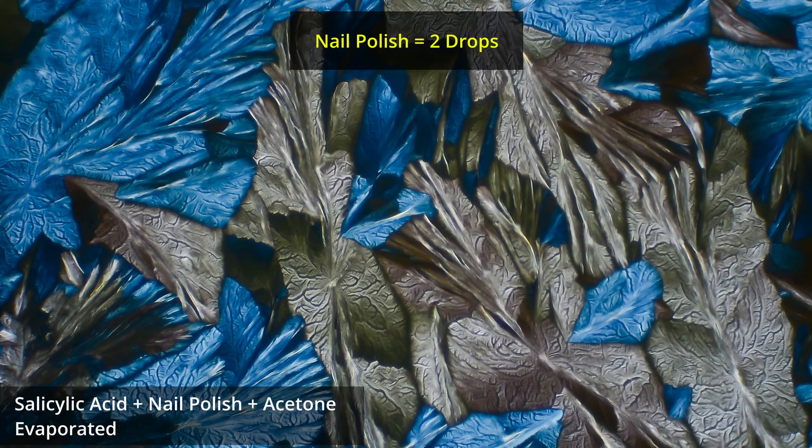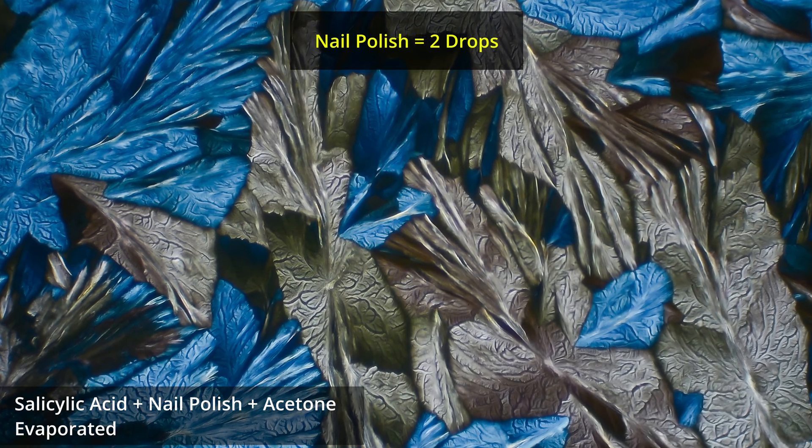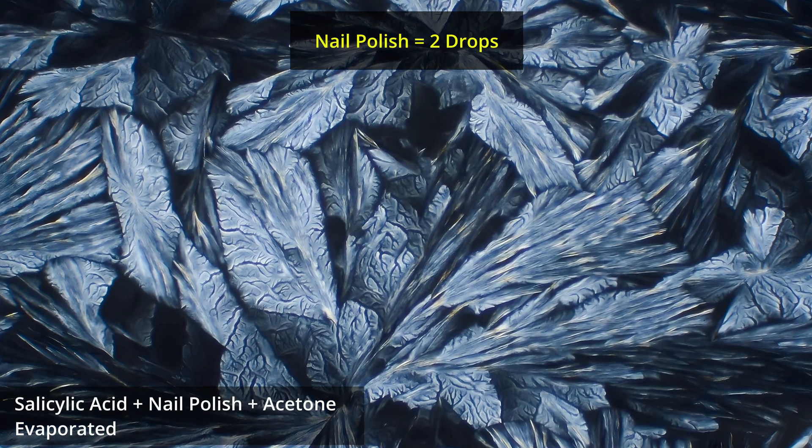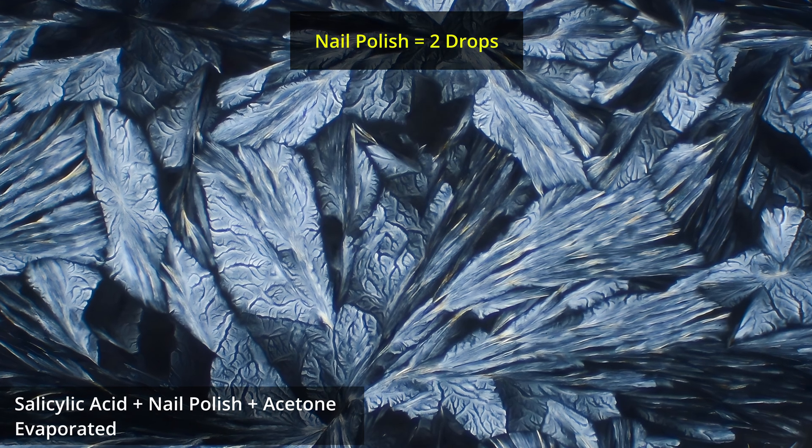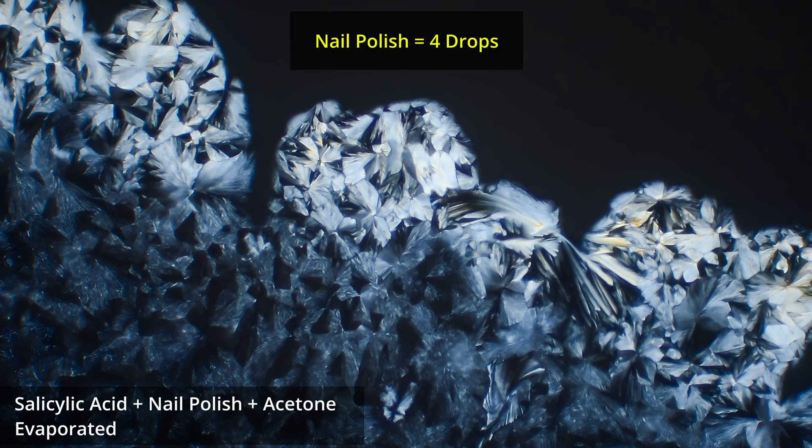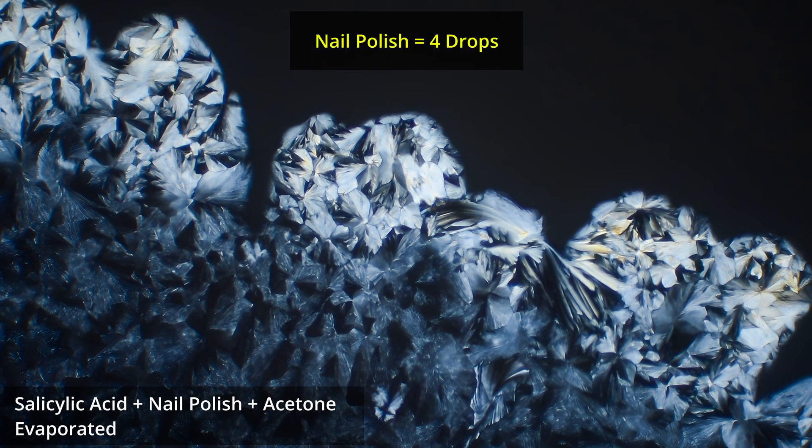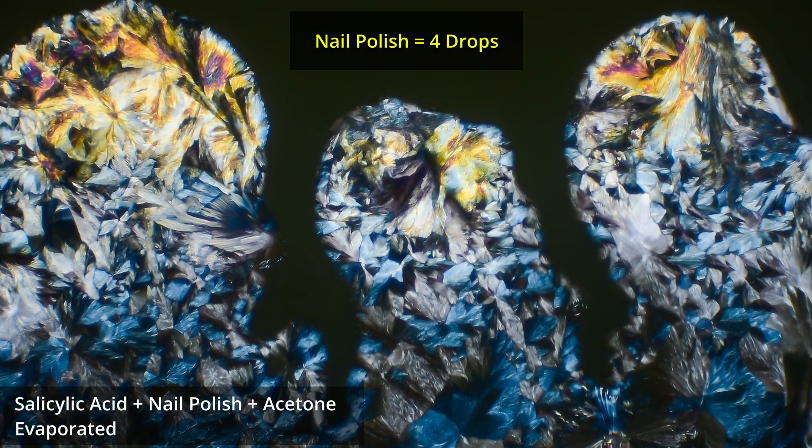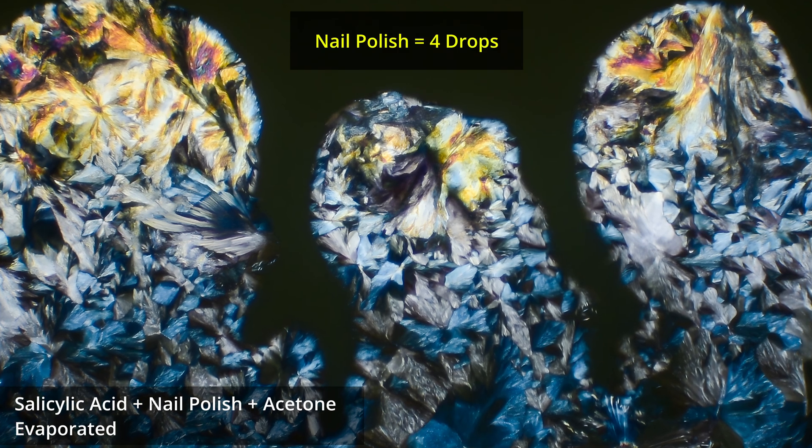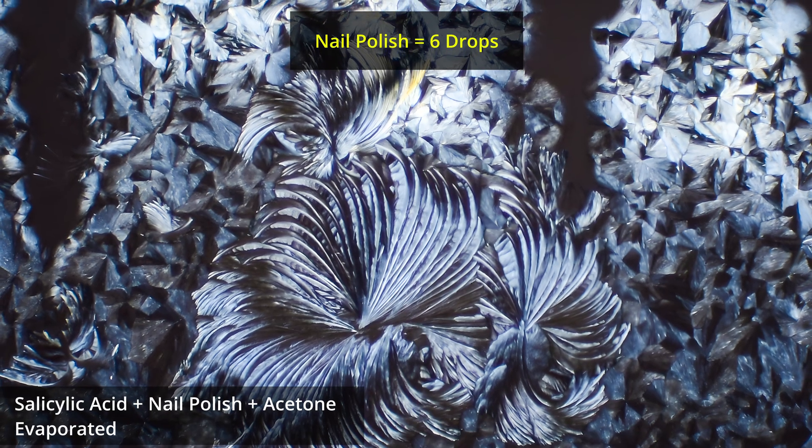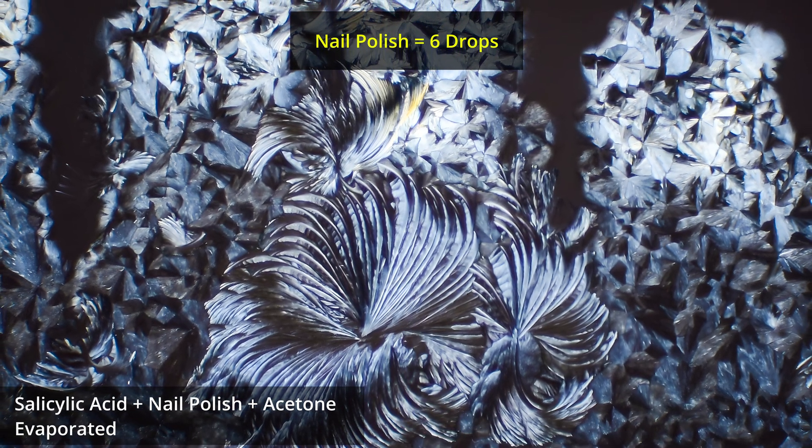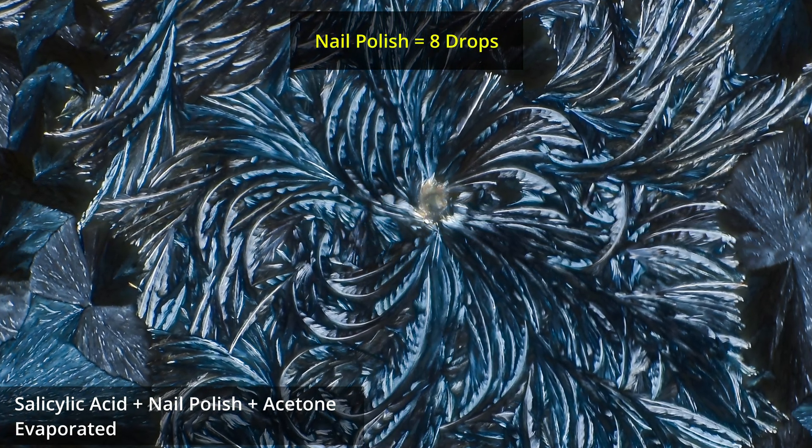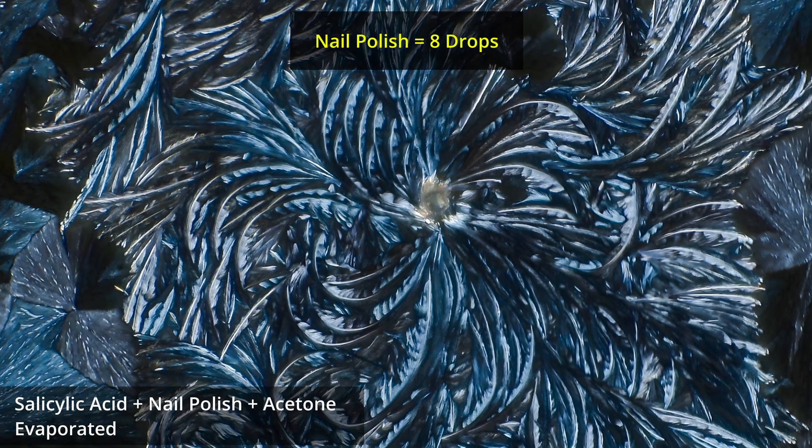I experimented with different proportions of acetone, nail polish, and salicylic acid, a common ingredient in wart remover. Each image shows progressively more nail polish in the mixture. Watch how the crystal forms evolve, from large layered structures to clustered formations. Notice how they become smaller and more curled as nail polish increases. The nail polish contains polymer chains that interfere with normal crystal growth. These long molecules adsorb to the growing crystal surfaces,